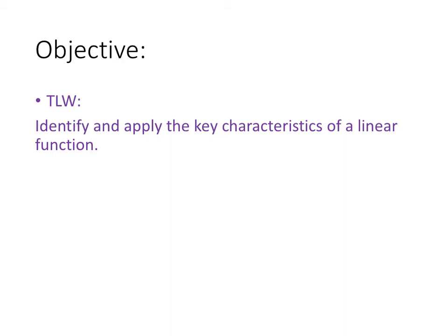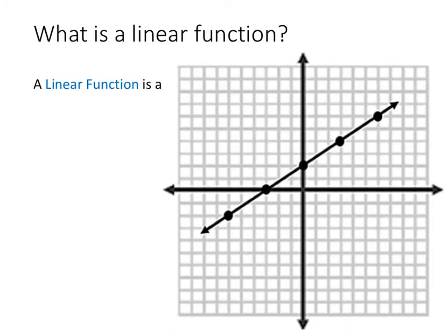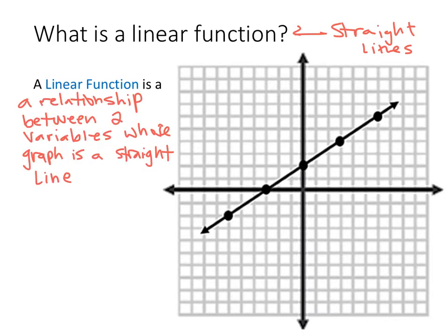We're going to look at the characteristics of a linear function and understand them the way we now understand functions, with the different properties that they may or may not have. The first thing we're going to look at is the definition of what a linear function is. Linear functions are basically going to be straight lines. A linear function by definition is a relationship between two variables whose graph ends up being a straight line.